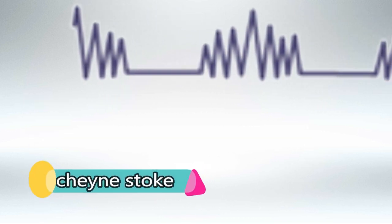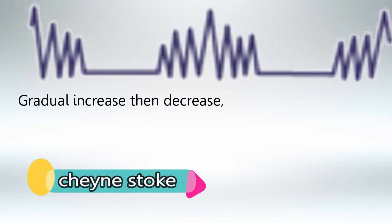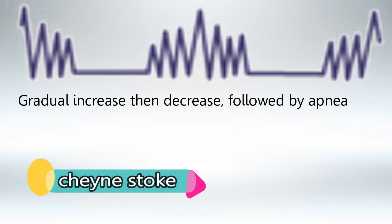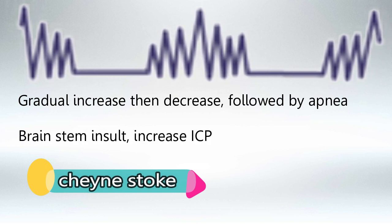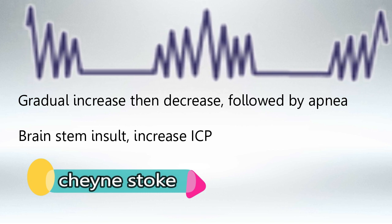Next is Cheyne-Stokes pattern, which is a gradual increase then decrease followed by a period of apnea. We see this in brainstem insults and increase in intracranial pressure.